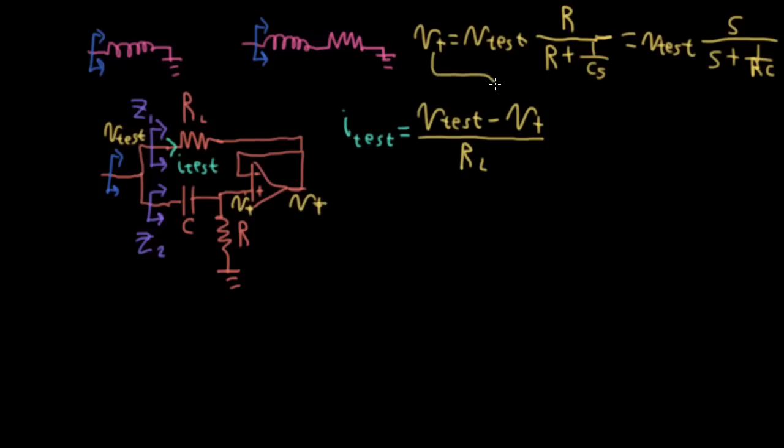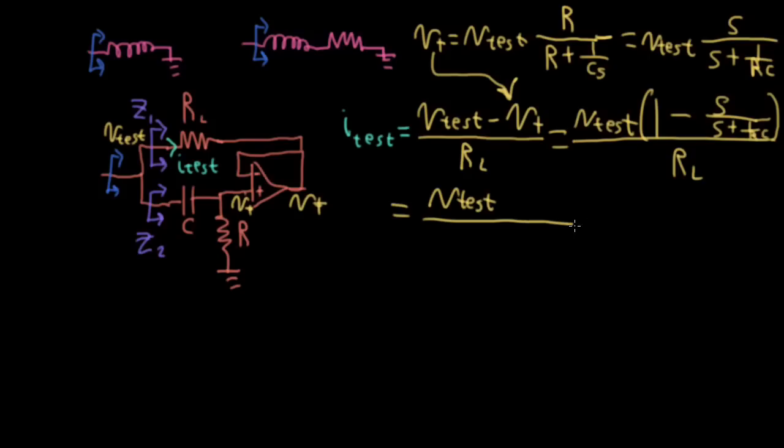So let me plug this V plus expression into V plus here. I'll be able to factor out VTEST from both terms. And then I'll have 1 minus this S over S plus 1 over RC. And this is all over RL.